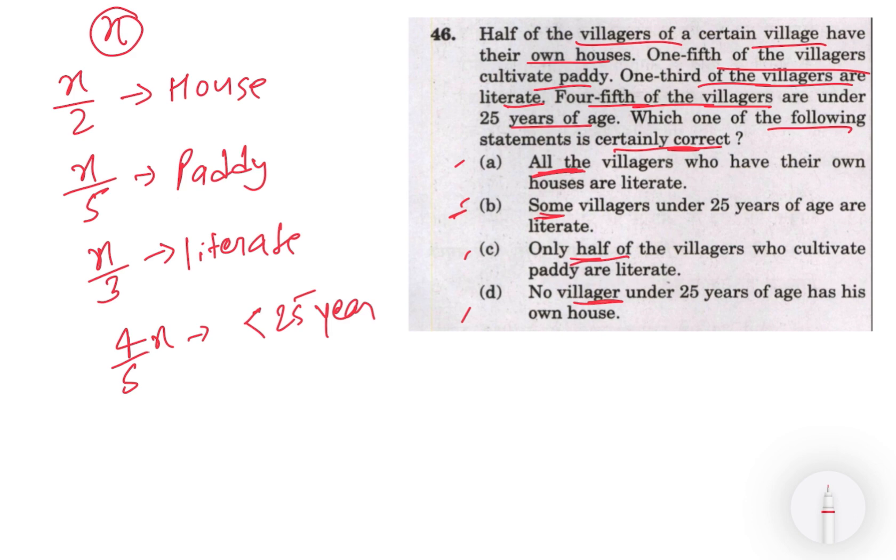Chaliye hum long ismeh nikalke dekhte, ismeh kya aata. So pehla hai: all the villagers who have their own houses are literate. So yeh house hai - x by 2 ke paas house hai, aur literate x by 3 ke paas hai. Toh suppose agar humne x is equal to 100 maan lete, toh ismeh se pachas logo ke paas house hoga aur x by 3 literate honge, toh suppose 33 log literate honge.